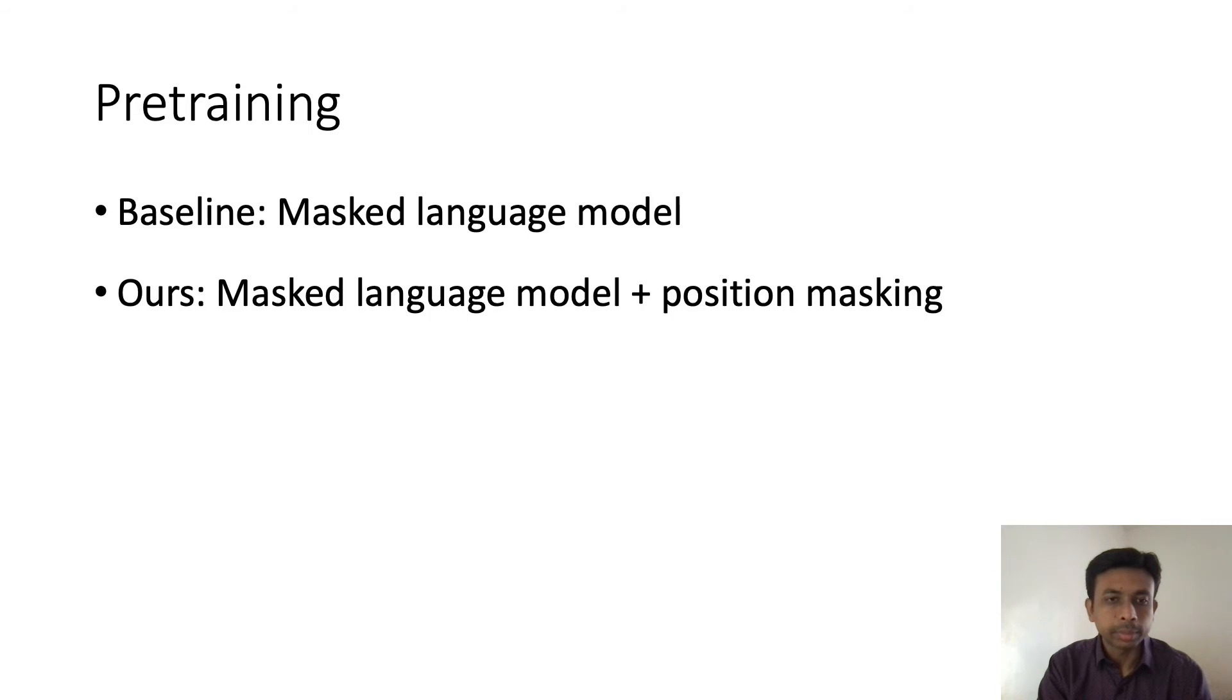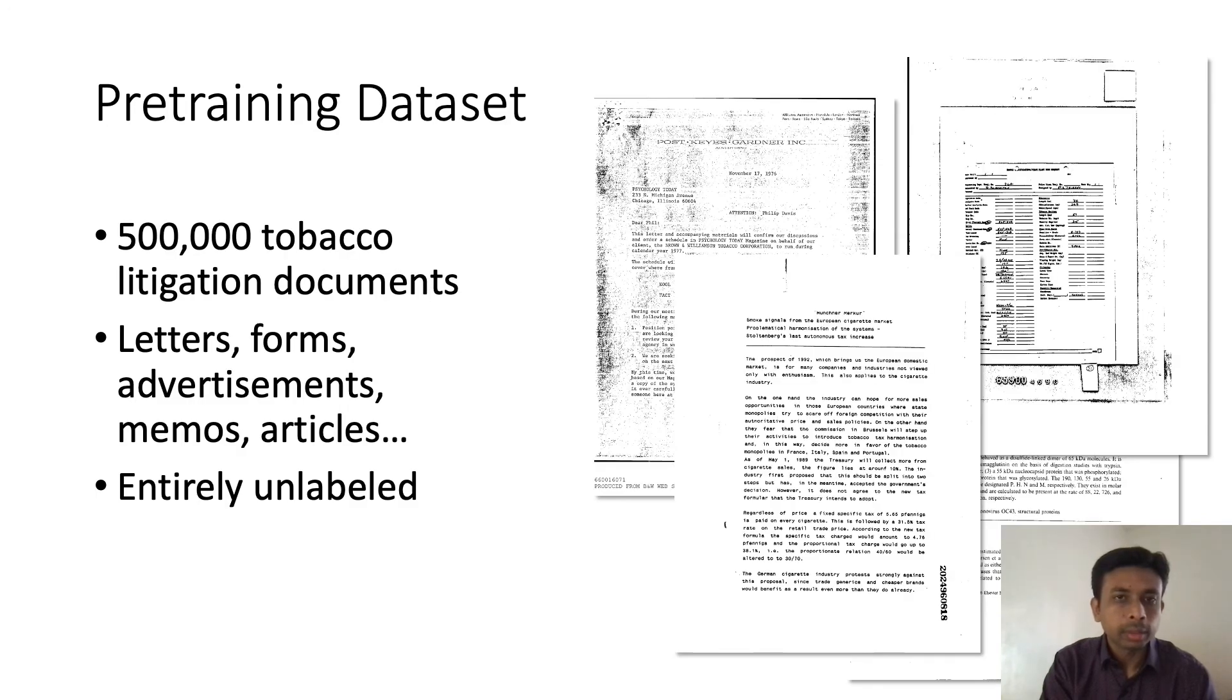Now let's look at the experiments. Similar to BART, we have these two training stages: pre-training and fine-tuning. For pre-training, BART and LayoutLM both use the masked language model loss. For our model, we add the position masking loss. For the pre-training dataset, we use 500,000 tobacco litigation documents. These are different types of documents like letters, forms, advertisements, etc., and there is no label for these documents.